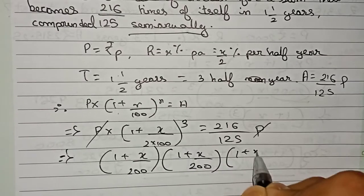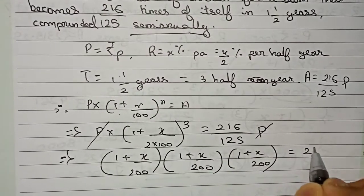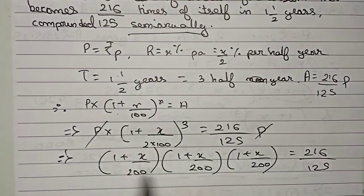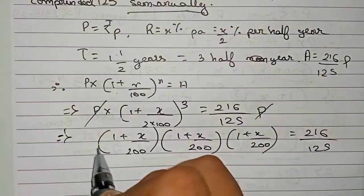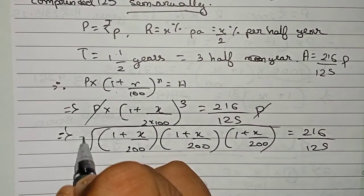This is equals to 216 by 125. So to reduce the number to only one time, you have to do the cube root. So you do a cube root here.